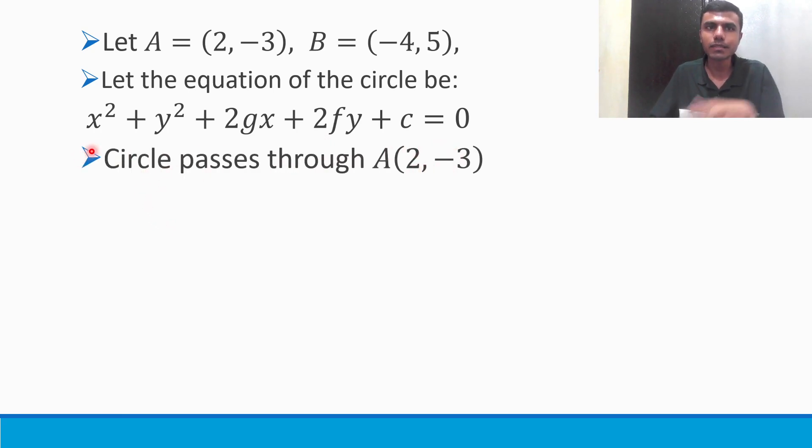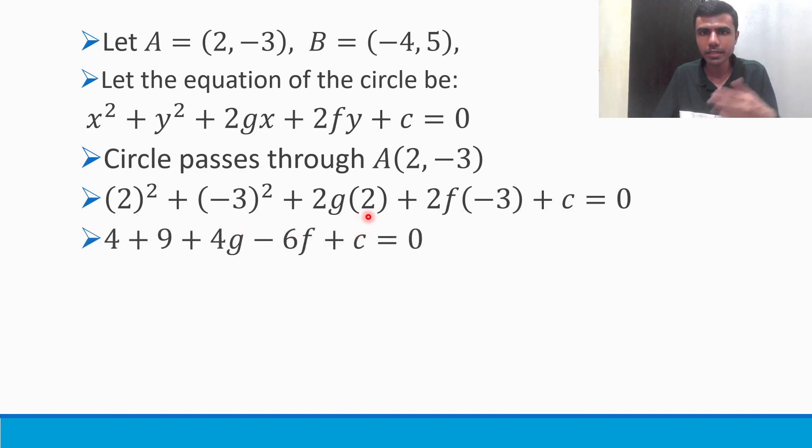Circle passes through (2, -3). So instead of x and y in this equation, we can use 2 and -3. Two square plus minus three square, 2g into 2. Basic simplification: 4 + 9 + 4g - 6f + c = 0. 4 plus 9 is 13. 13 + 4g - 6f + c = 0. Mark it as equation 1.